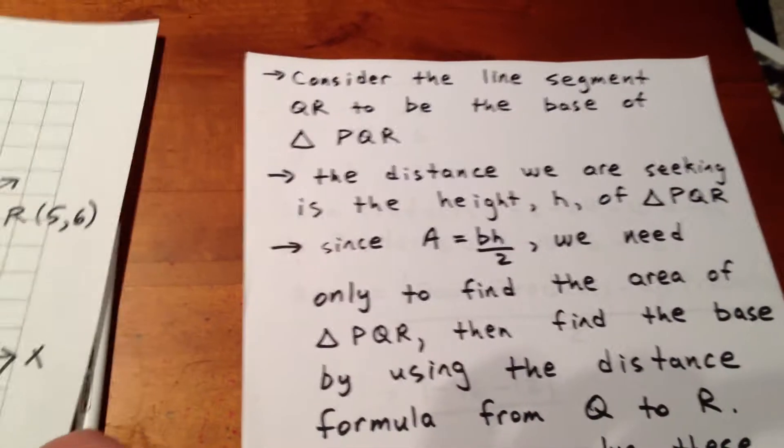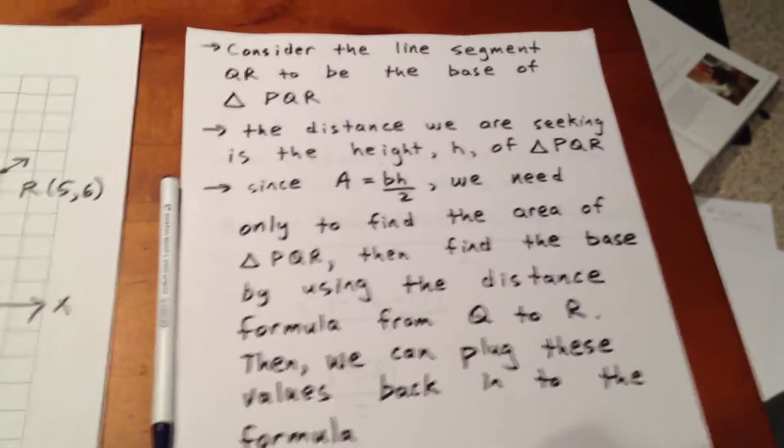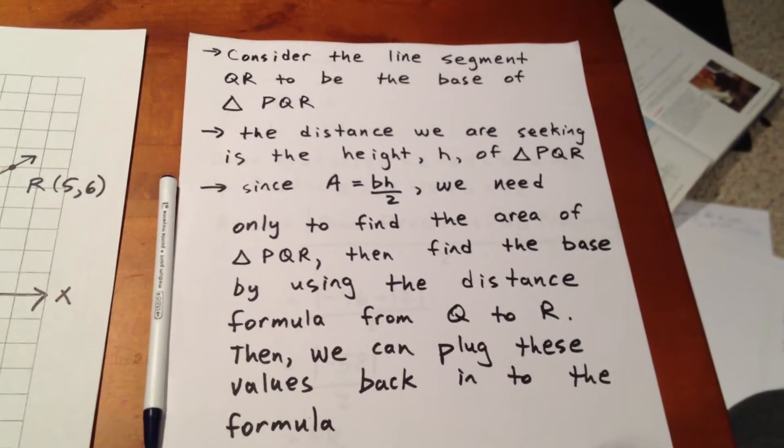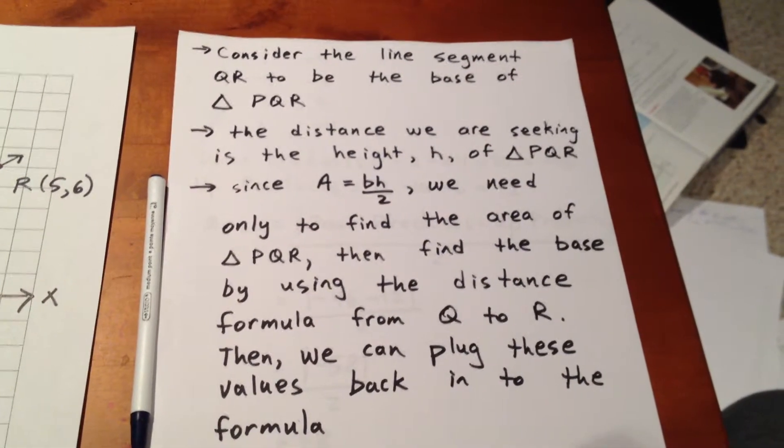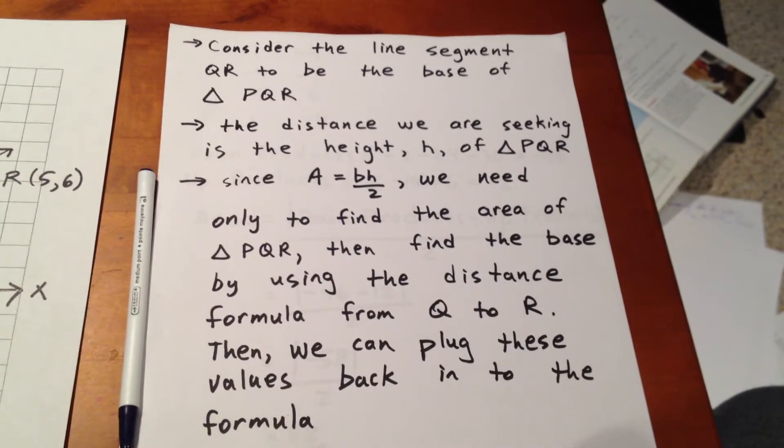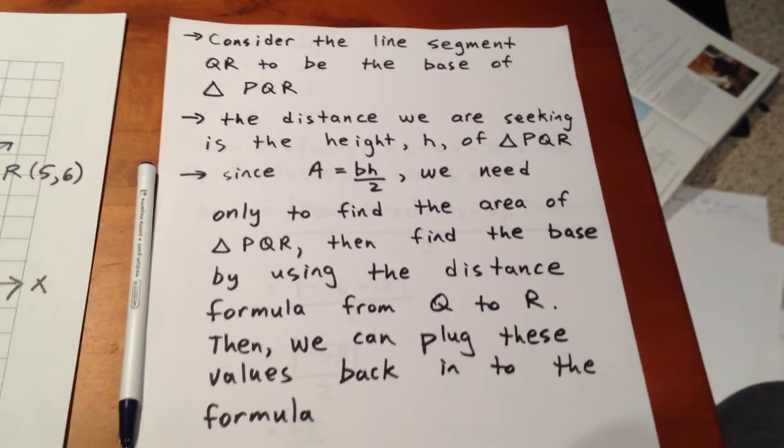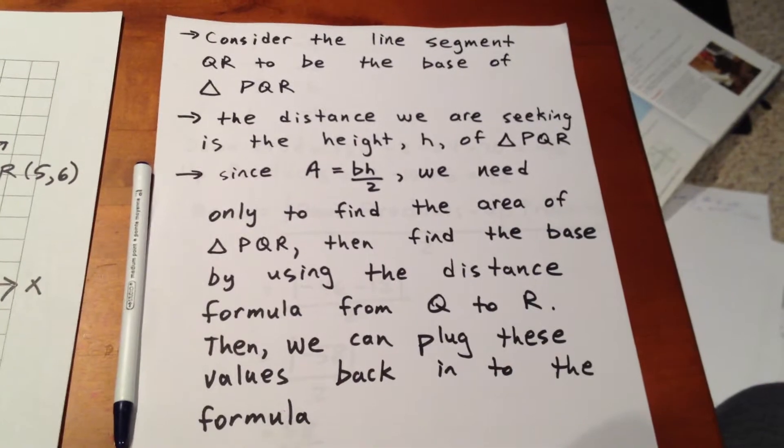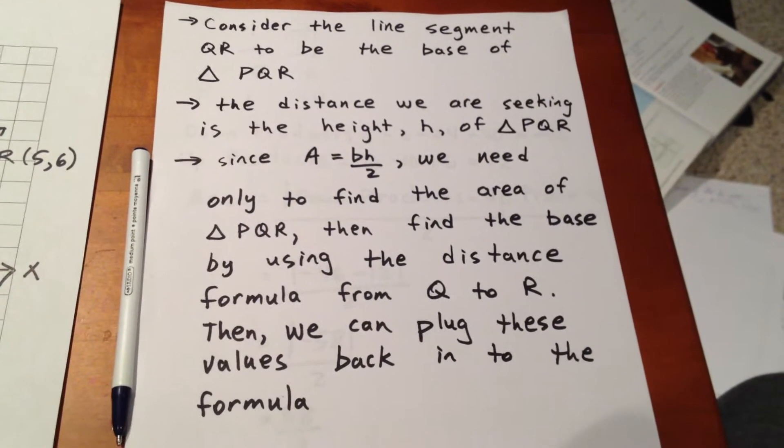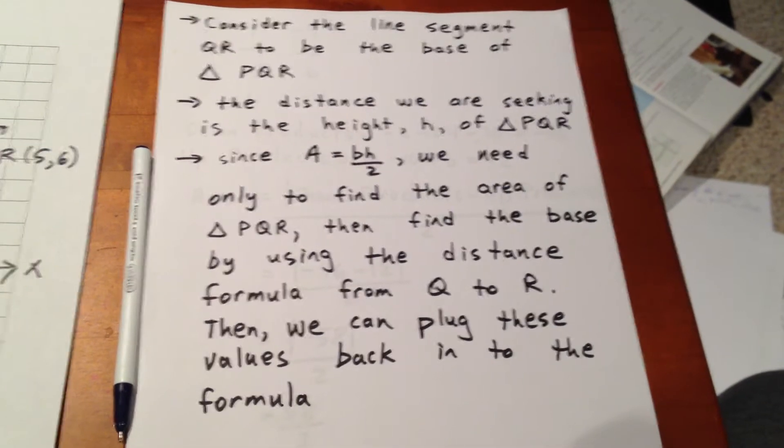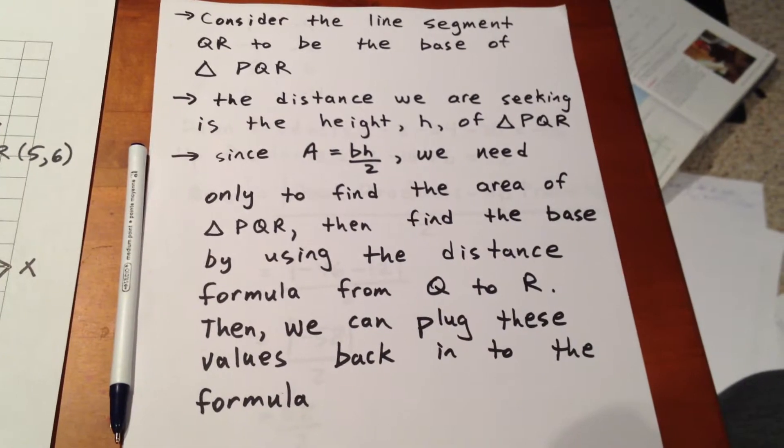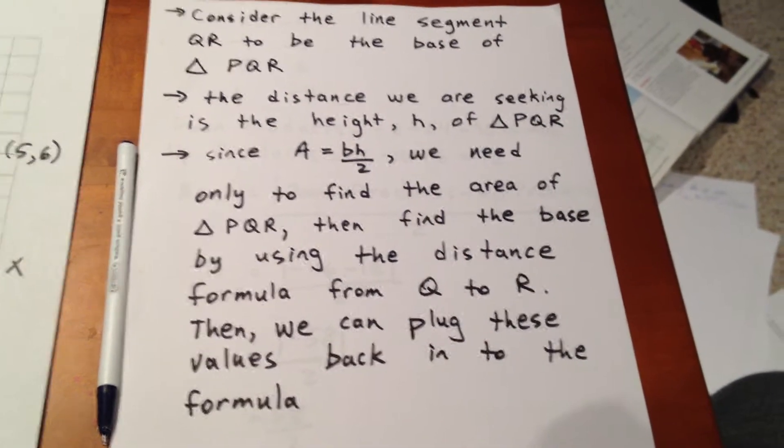So as a little bit of a recap, here's what we're going to do. We're going to consider the line segment QR to be the base of the triangle PQR. We're going to recognize that the distance that we're looking for is the height of triangle PQR. Since area is equal to base times height over 2, we need only to find the area of triangle PQR, then find the base by using the distance formula from Q to R. Then we plug these values back into the formula.